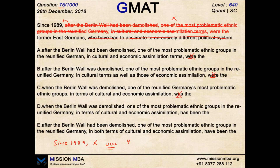It's not about 'have been' — it is 'one of the most problematic ethnic groups,' which is singular, and cannot take 'have been.' It has to be 'has been.' So the clear correct answer is option D. No other errors need to be rectified.